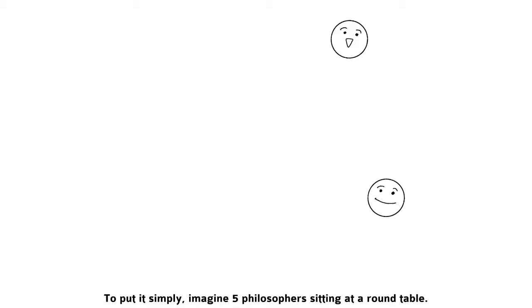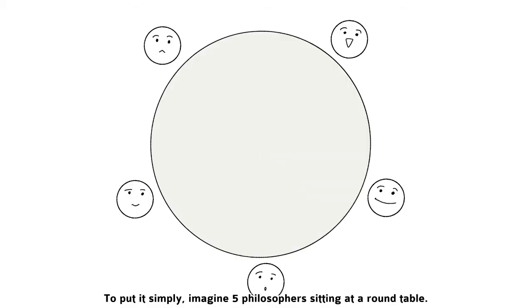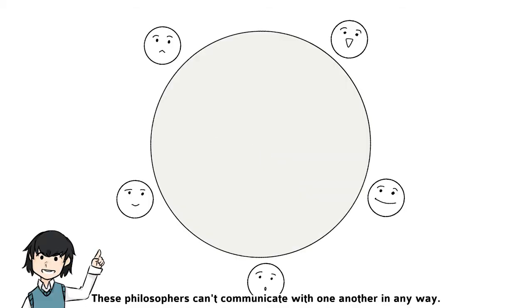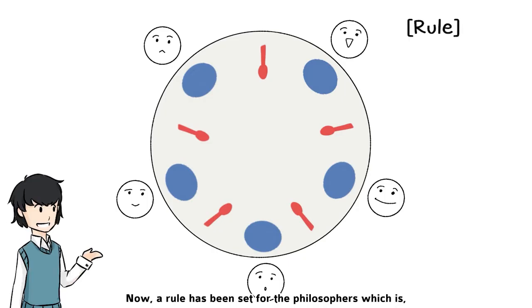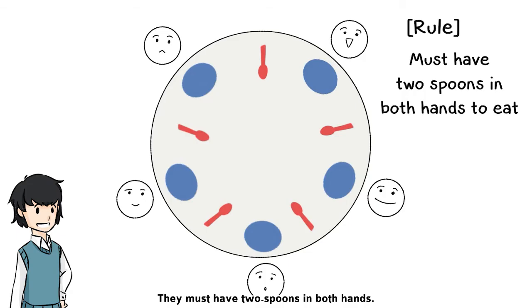To put simply, imagine five philosophers sitting at a round table. These philosophers can't communicate with one another in any way. Each of them has a bowl of food, but there is only one spoon between the bowls. Now, a rule has been set for the philosophers, which is they must have two spoons in both hands. If not, they are not allowed to eat.